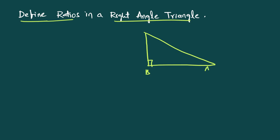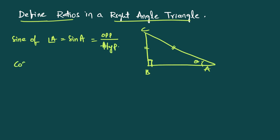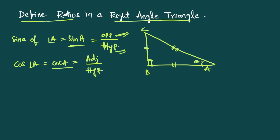We take a right angle triangle ABC where the right angle is at B, and theta is at angle A. Sine of angle A is equal to opposite divided by hypotenuse. Cos of angle A is equal to adjacent divided by hypotenuse. So: sin A = opposite/hypotenuse and cos A = adjacent/hypotenuse.